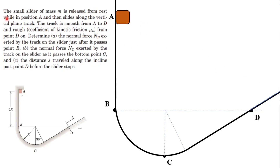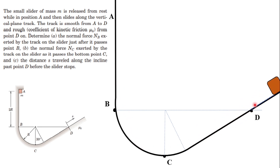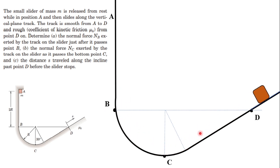In this video we'll see the work-energy principle for solving such types of problems. The particle will move from position A to its final destination, and during this process we'll analyze the velocities of the particle and how the normal force can be applied on the block by the guide. The problem states that a smaller slider of mass m is released from rest at position A and slides along the vertical plane track. The track is smooth from A to D and rough, with a coefficient of kinetic friction, from point D on. We need to determine the normal force NB exerted by the track just after it passes point B, the normal force NC at the bottom point C, and the distance traveled along the incline past point D before the slider stops.